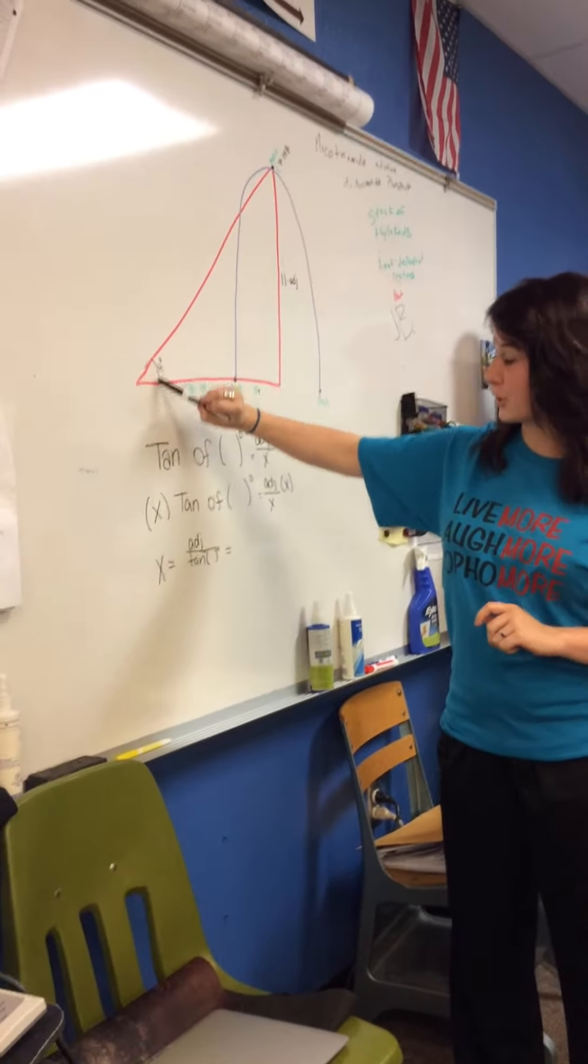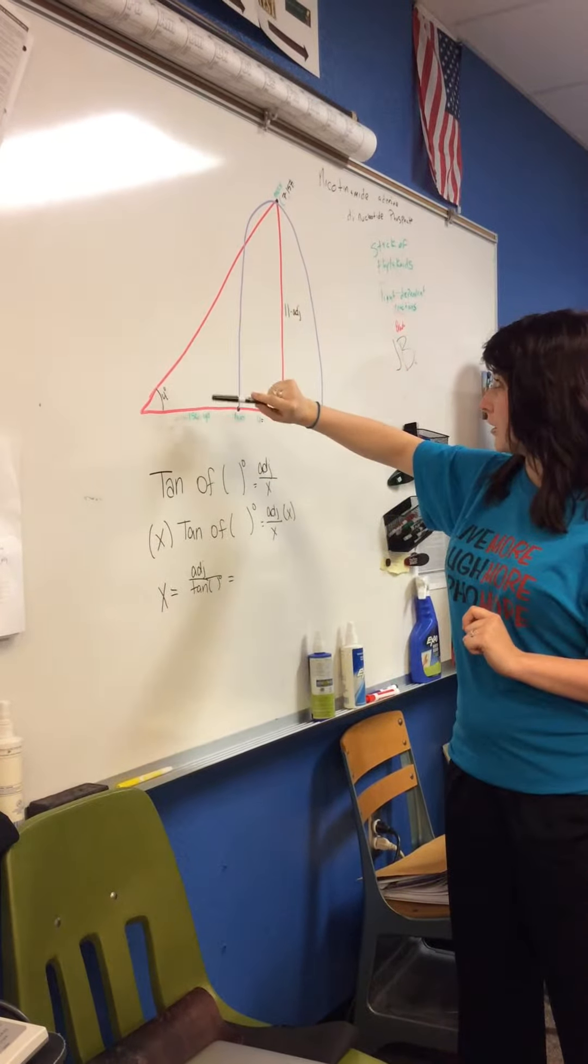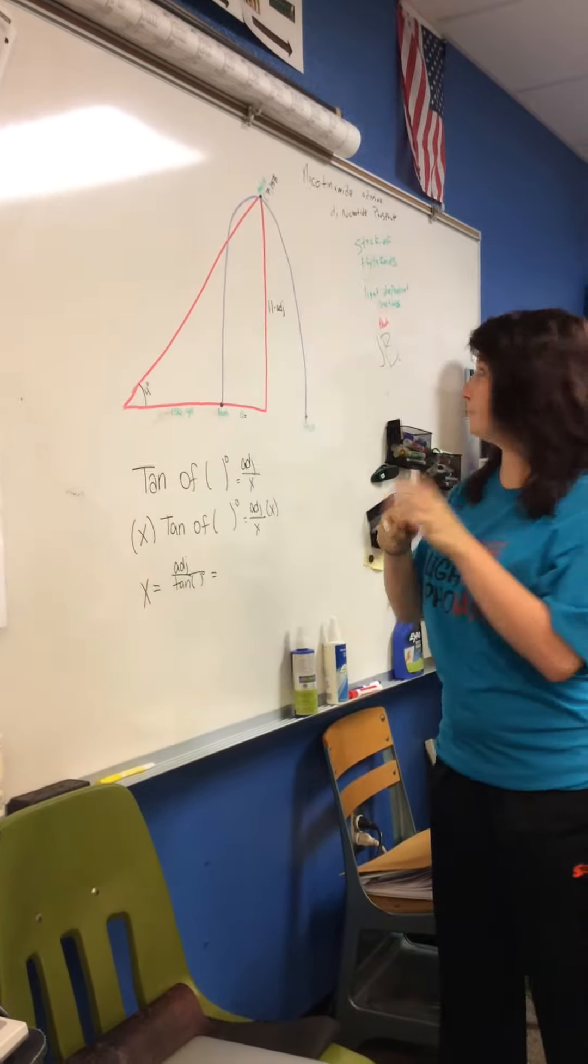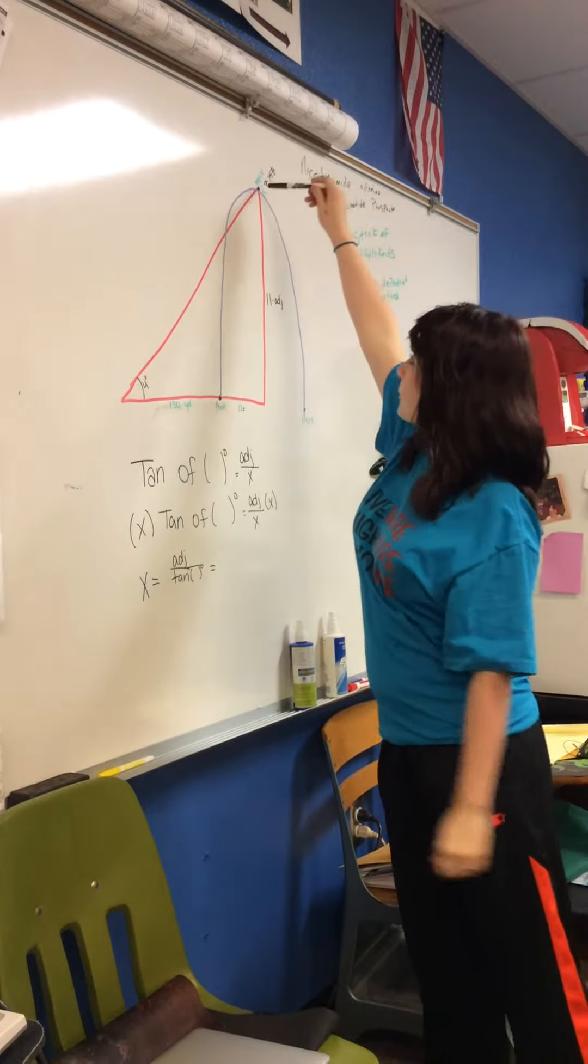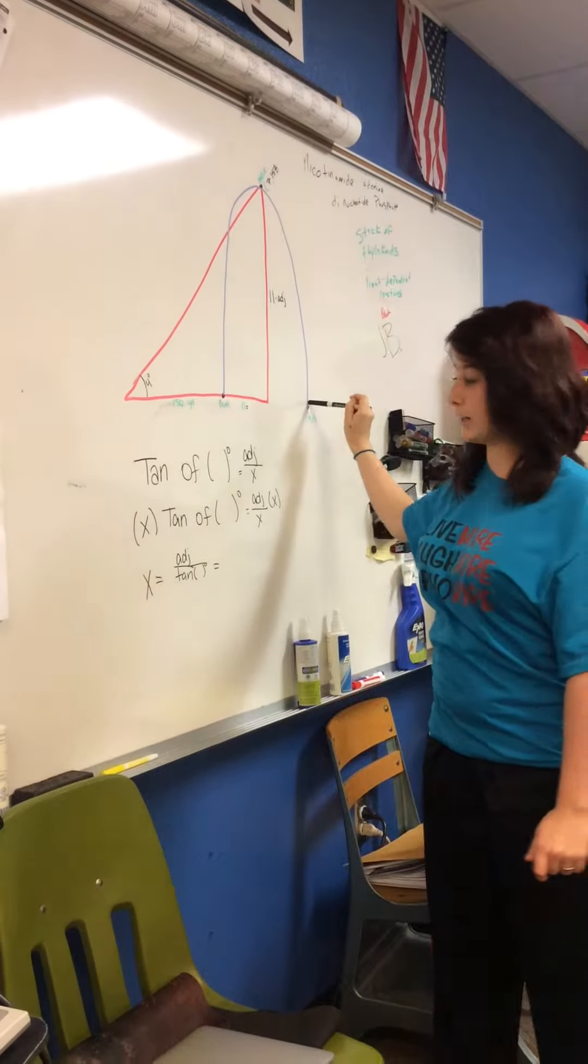So right here, it has 4 degrees, which is our angle from when we shot it. Up here, we're going to find our maximum point of how high it went, and down here we're going to talk about where it landed.